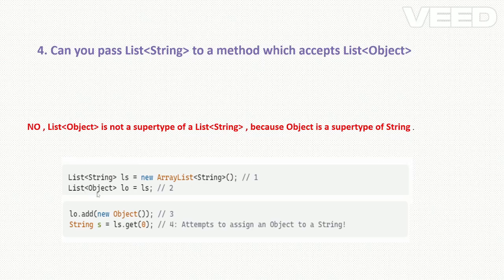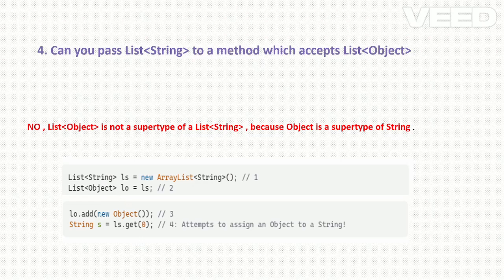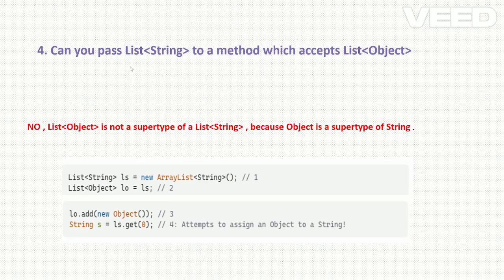To understand this, consider this example: in line 1 we create a List<String>. In line 2 we create a List<Object> and try to assign the string list to it — this is not allowed in Java. But if it were allowed, in line 3 we add a new Object to the list. Then in line 4, since it is a List<String>, we try to get the first element into a String variable — but it is an Object, so we are attempting to assign an Object to a String, which is completely wrong. That is why Java throws a compilation error at line 2.